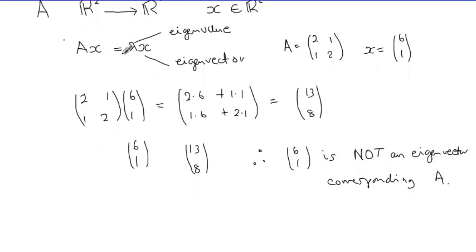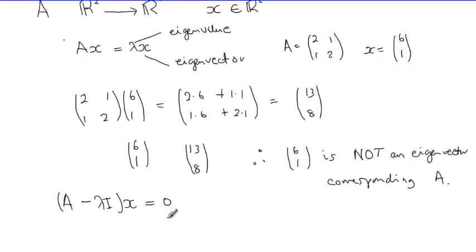As part of the summary, we should remember that the eigenvector equation AX = λX leads to the expression (A − λI)X = 0. The vector X is a non-trivial eigenvector corresponding to matrix A if the determinant of (A − λI) equals zero.